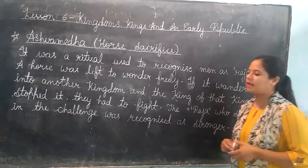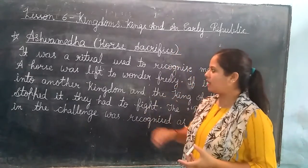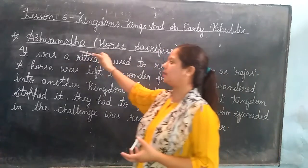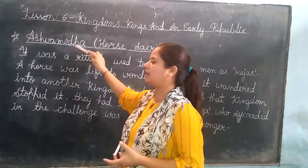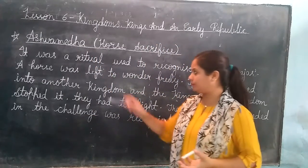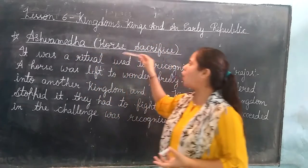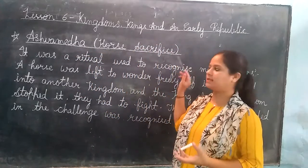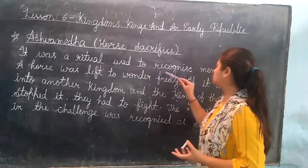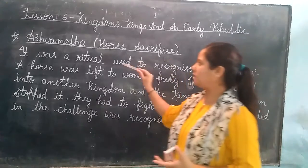Now let us discuss Ashwamedha Yajna. A ritual called Ashwamedha Yajna was performed. Ashwamedha Yajna is a sacrifice — a ritual used to become a powerful Raja or King. This is the Ashwamedha horse sacrifice.